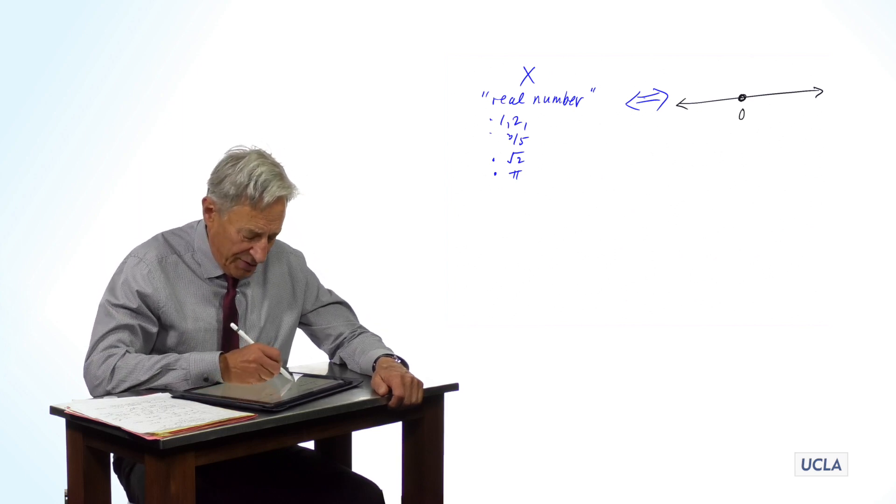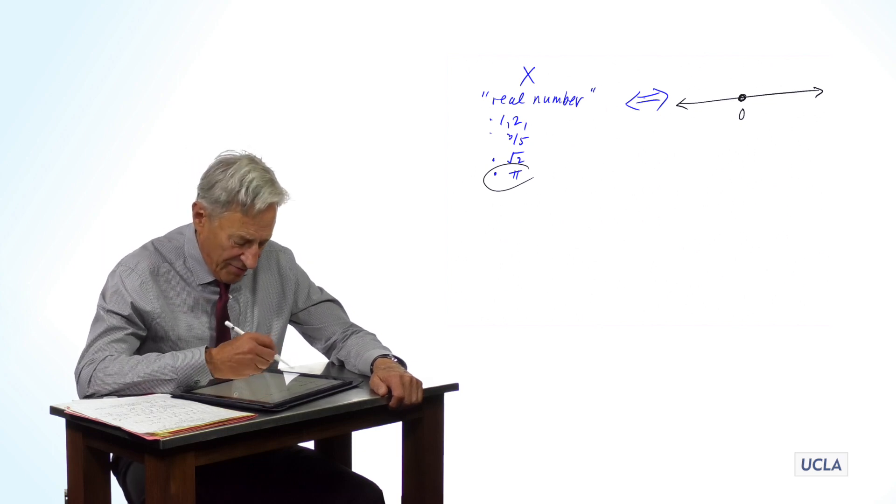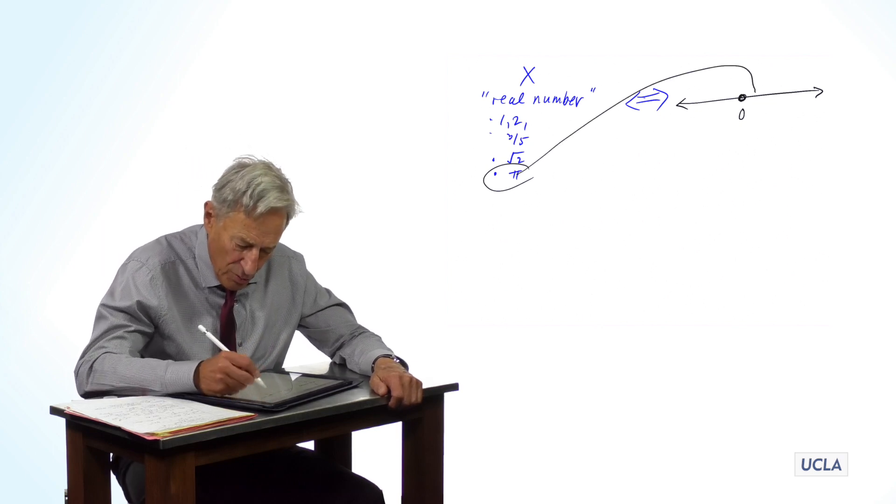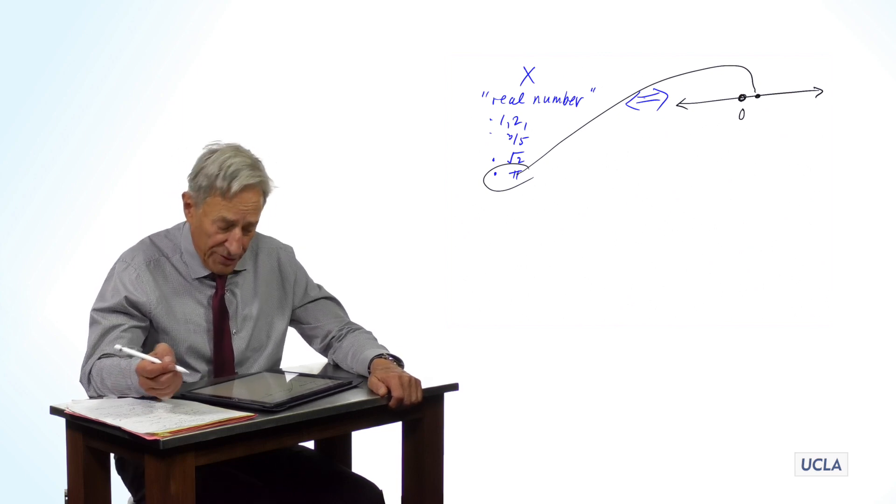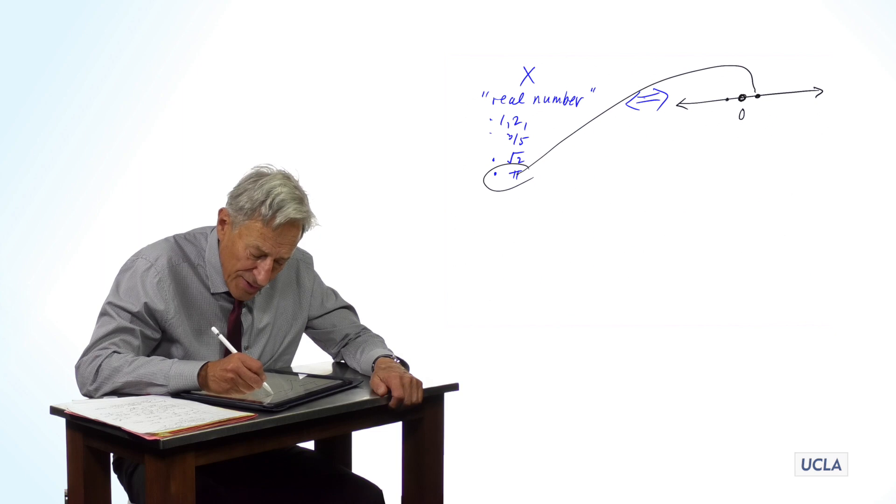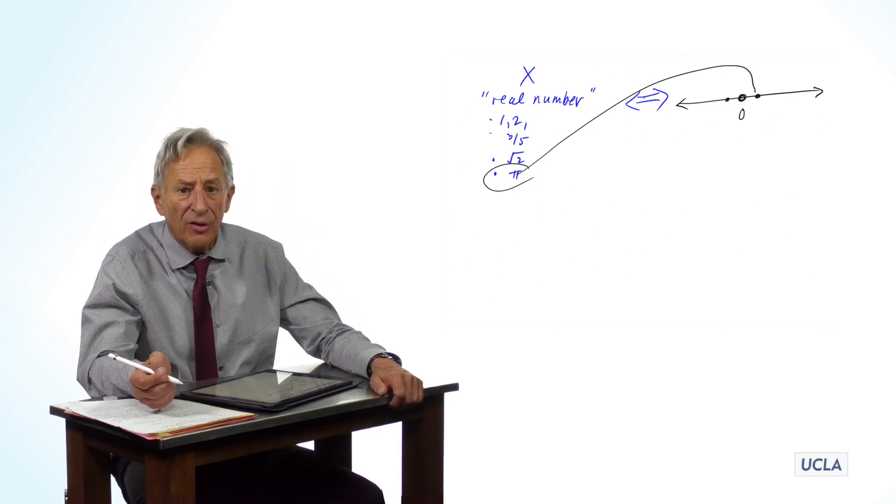So, the point pi, which is 3.1 whatever, is equal to a point on that real number line. And the point minus pi, or minus pi over 2, is equal to another point on that real number line.